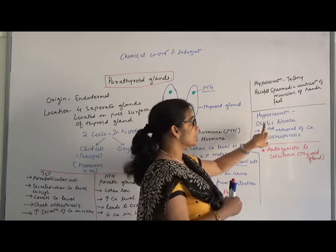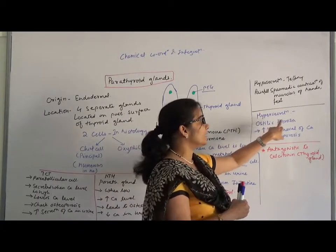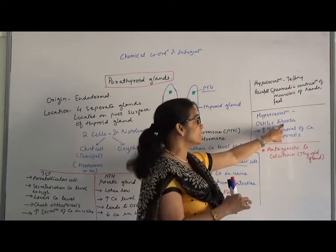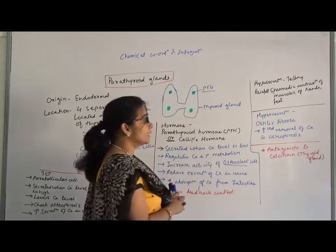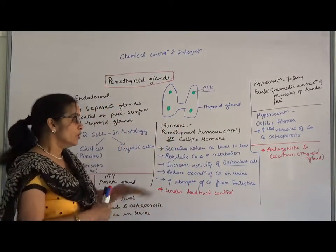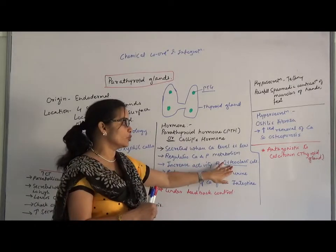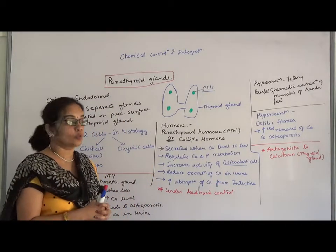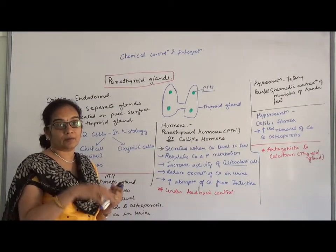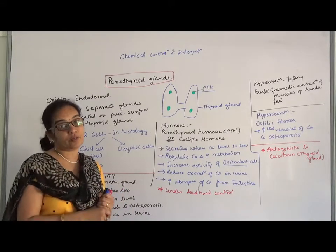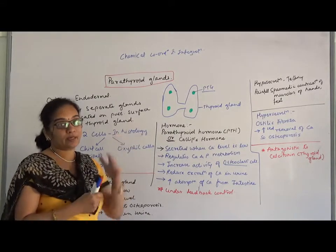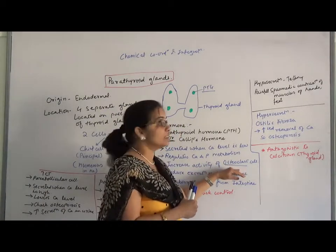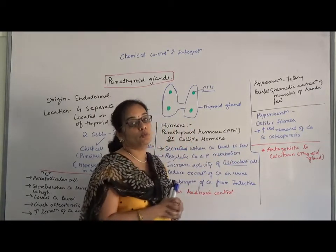In hypersecretion, it leads to osteitis fibrosa. In hypersecretion, there is increased removal of calcium — osteoclast activity becomes hyperactive. If osteoclast activity is hyper, more and more calcium and phosphorus is removed from the bone to maintain the calcium level in the blood. If osteoclast activity increases and more calcium is removed from the bone, it will lead to osteoporosis.